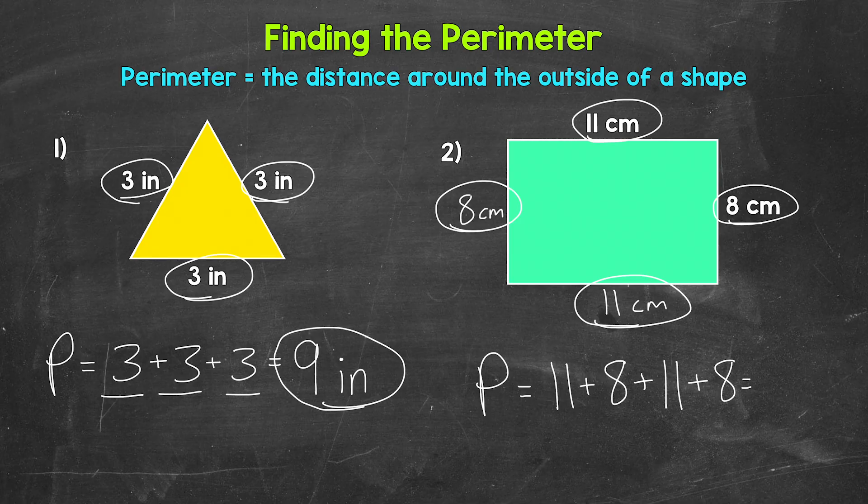For example, 11 plus 11 plus eight plus eight will work as well. So as far as adding, 11 plus eight is 19 plus 11 is 30 plus eight is 38. So the perimeter here, 38 centimeters.